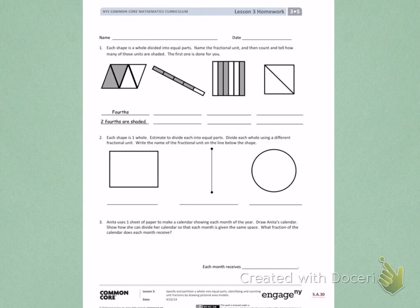So I see what I have to do is name the fractional unit, and then count to tell how many are shaded. When I look at the first problem, I can see that there are 1, 2, 3, 4 sections that have been divided. So that is why it is named as fourths.